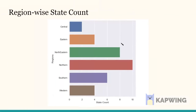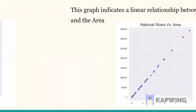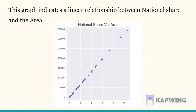This is the region-wise state count — the northern part is in the lead here. This graph indicates the linear relationship between the national share and the areas.